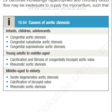The causes of aortic stenosis are divided into three groups. For infants, children and adolescents: congenital aortic stenosis, congenital sub-valvular aortic stenosis, congenital supra-valvular aortic stenosis. For young adults to middle-aged: calcification and fibrosis of congenitally bicuspid aortic valve, and rheumatic aortic stenosis. For middle-aged to elderly: senile degenerative aortic stenosis, calcification of bicuspid valve, and rheumatic aortic stenosis.